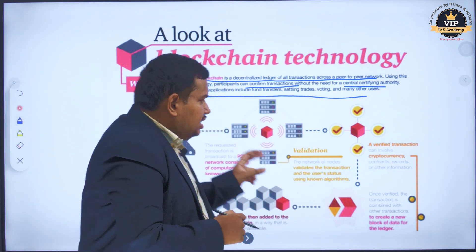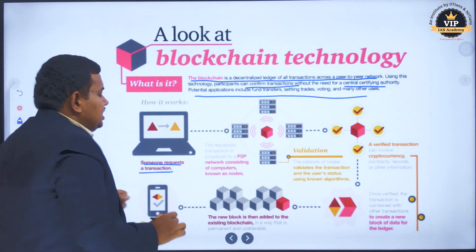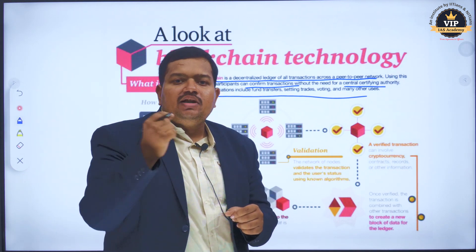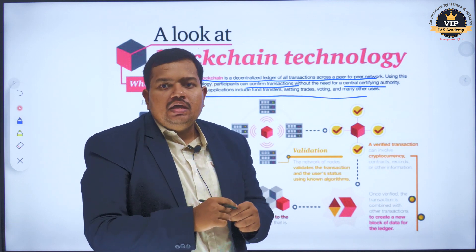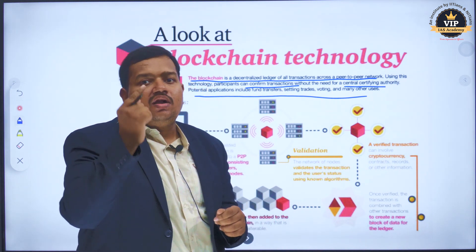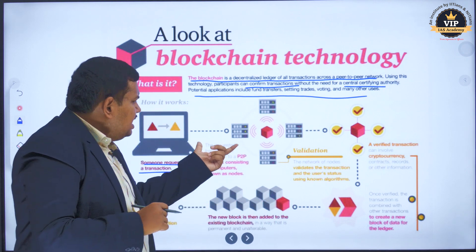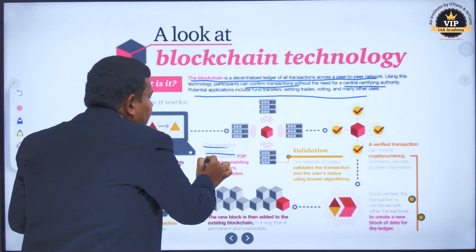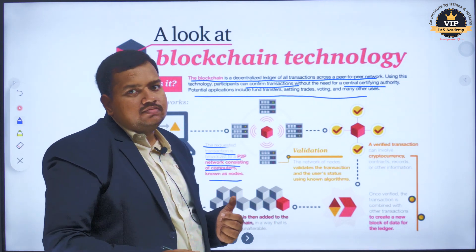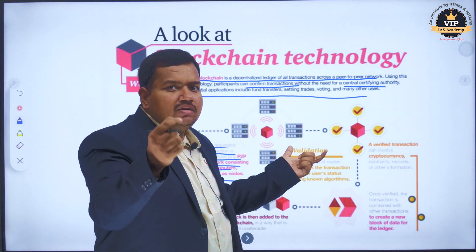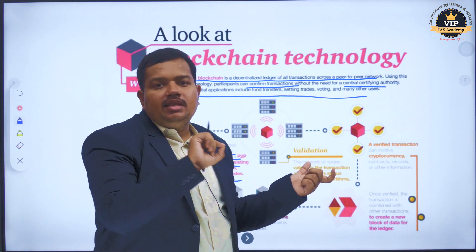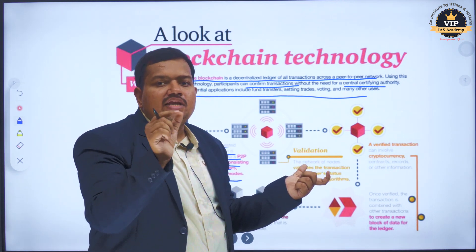Let's look at the blockchain process. First, someone requests a transaction — that means a transaction is requested. That transaction is then broadcasted through a peer-to-peer network consisting of computers known as nodes. Each transaction goes to a node.